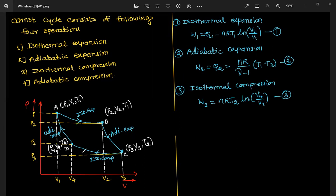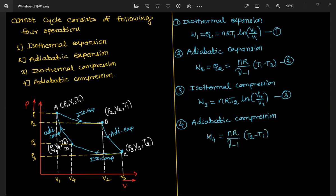Next, isothermal compression (C to D): W3 equals nRT2 · ln(V4/V3). Then adiabatic compression (D to A): W4 equals nR/(γ−1) · (T2 − T1), which equals −nR/(γ−1) · (T1 − T2). Call this equation number 4.